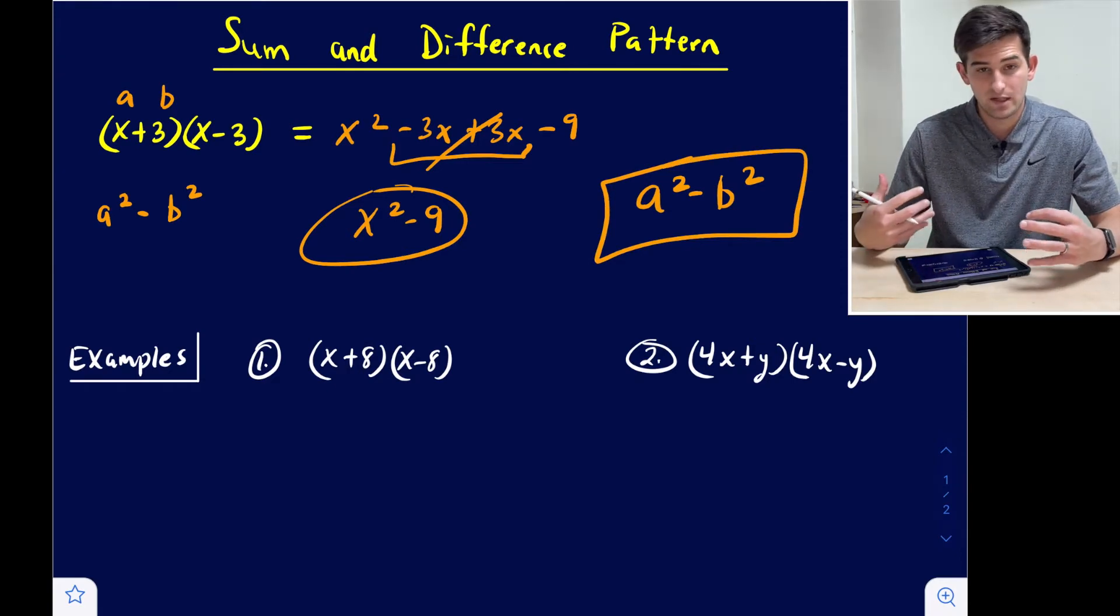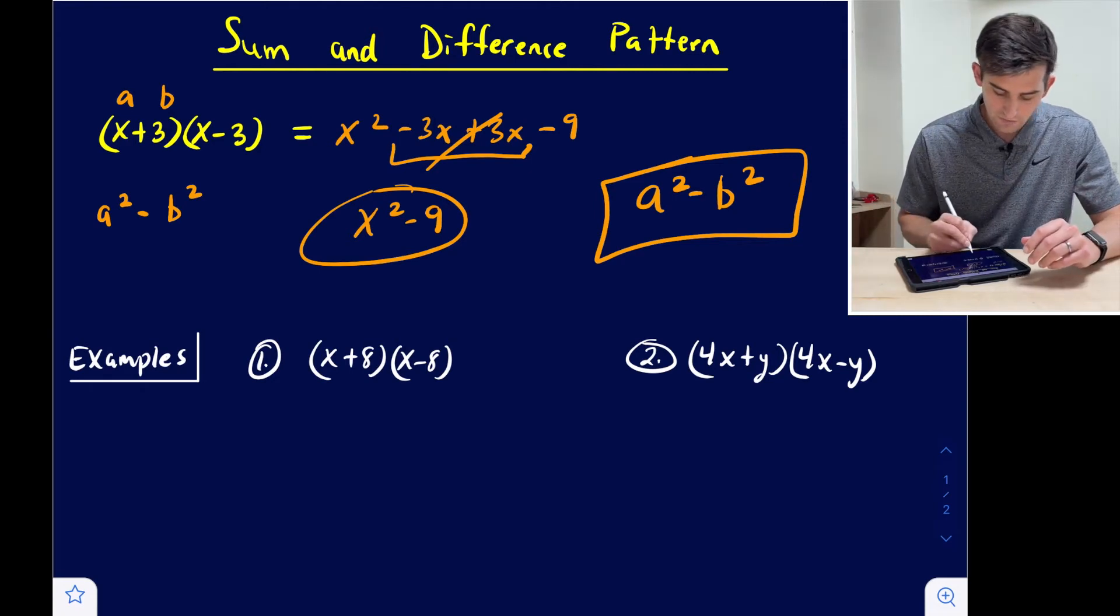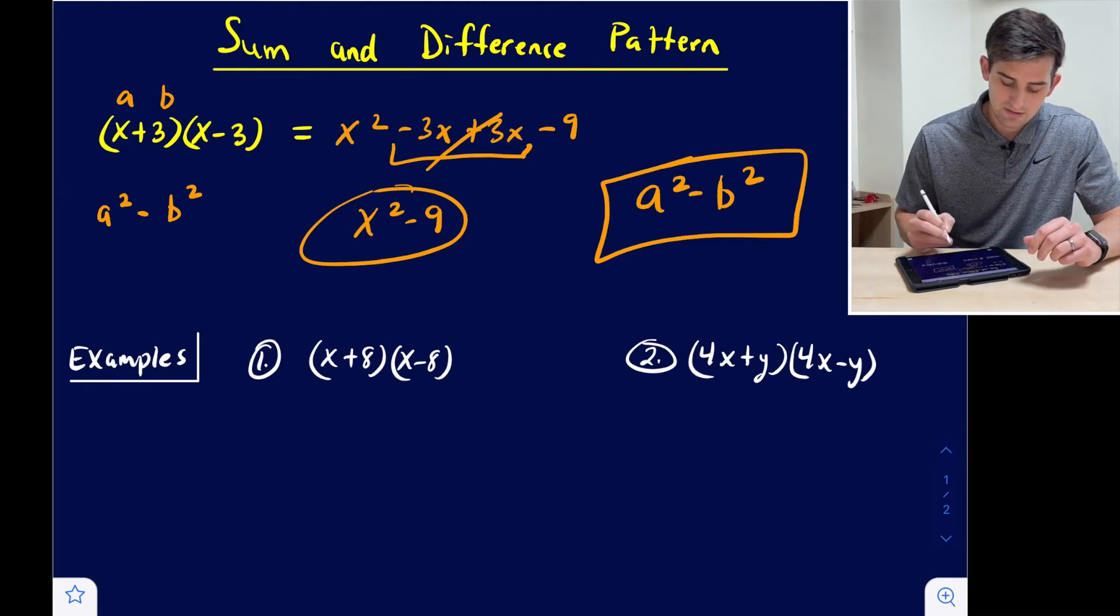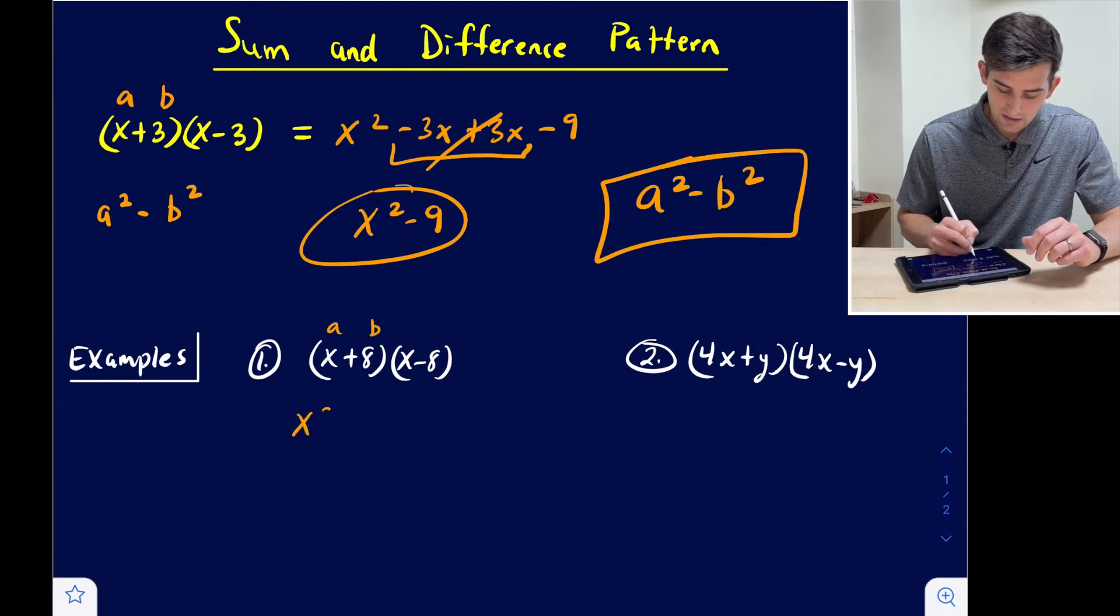We're going to apply that on a couple examples here, and just remember you can always check by foiling. Here we have x plus 8 times x minus 8. So there's a and there's b. This should be x squared minus 8 squared, which is x squared minus 64. That's our final answer.